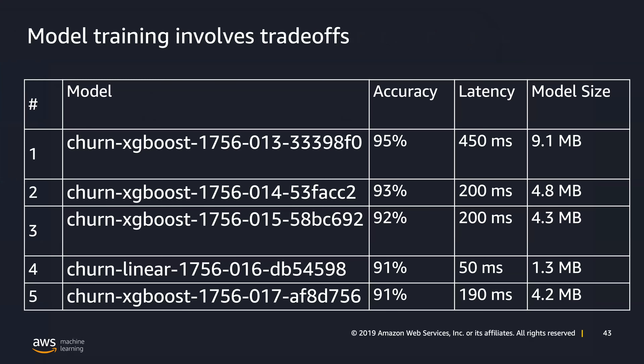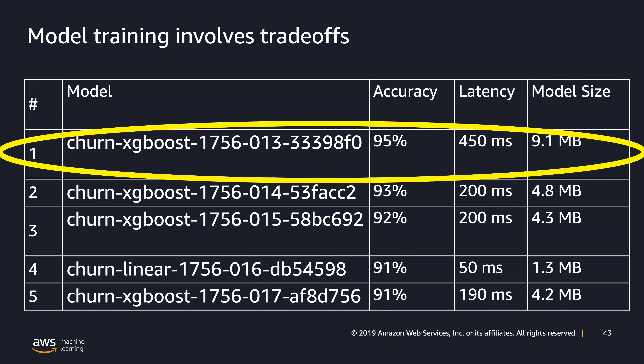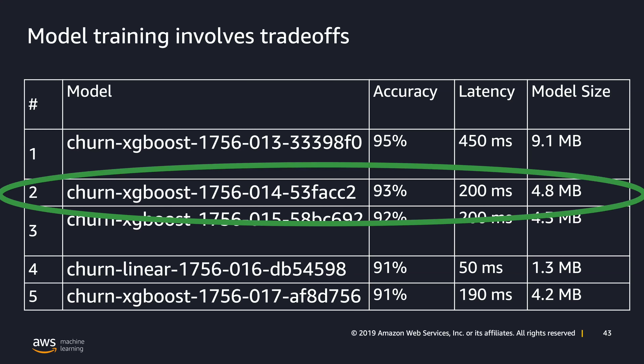One thing to note: you're going to see a list of models, and accuracy might not be what you're trying to optimize for. The top model created might have 95% accuracy, but the latency could be high. You might not care as much about accuracy but more about latency, depending on your use case — so you might choose a different model. This is something different for every person depending on their use case. Again, this is an art — it's not just one model that's best for everyone.